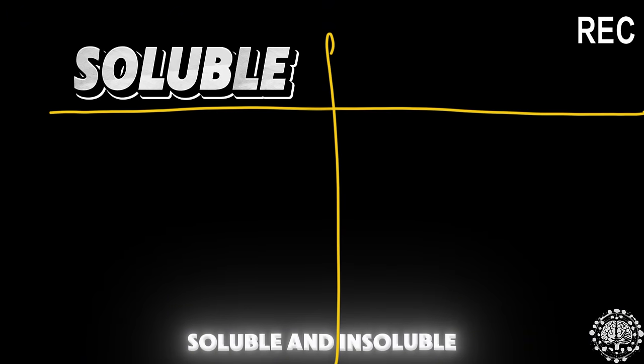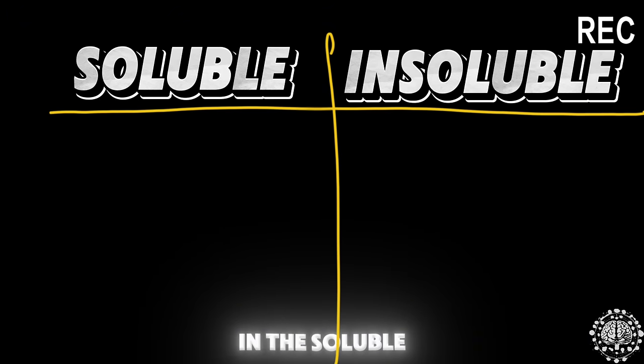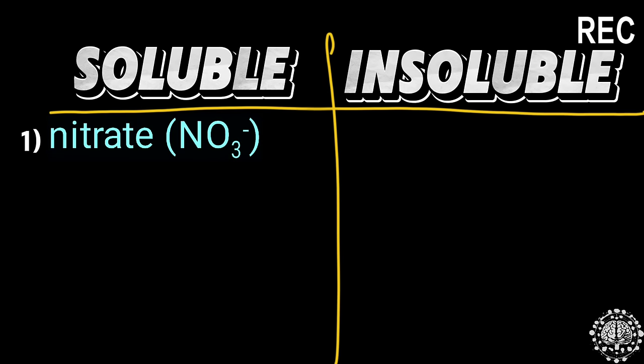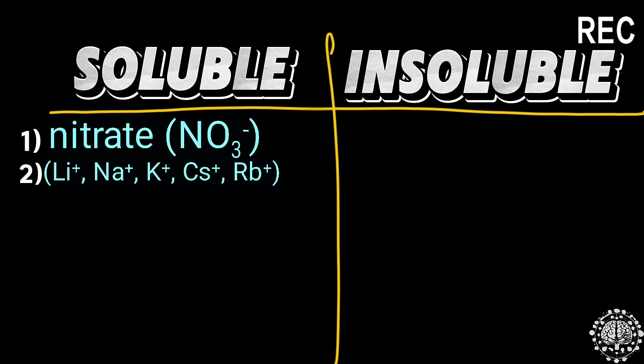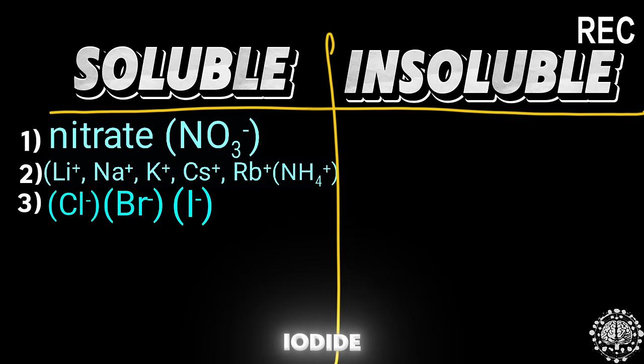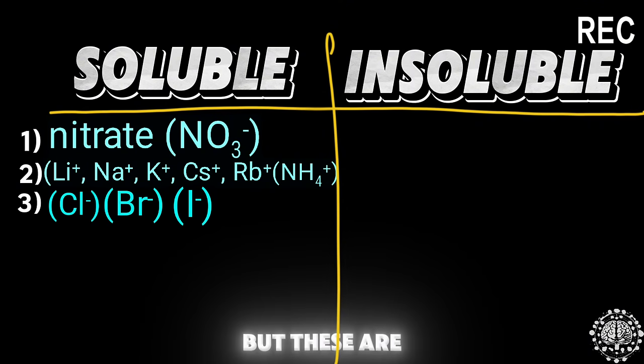In the soluble side we have nitrate, alkali metal ions specifically lithium, sodium, potassium, cesium, and rubidium, and the ammonium ion. We also have chloride, bromide, and iodide, but these are not soluble when they are with silver, lead, and mercury.